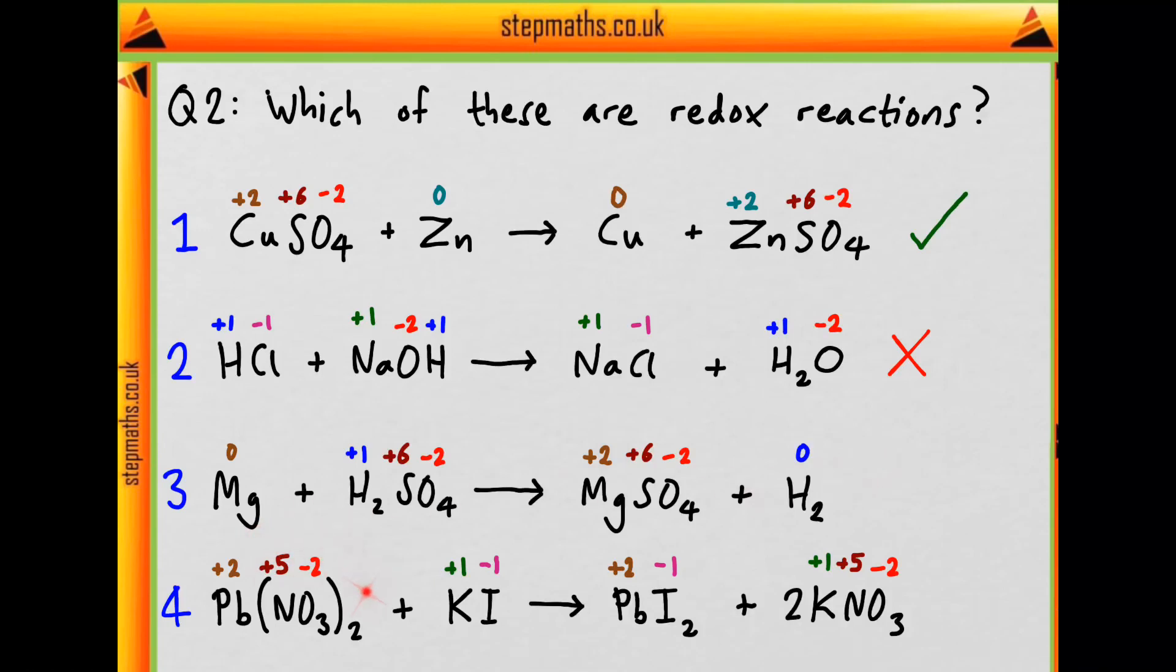Reaction three, we can see we've got magnesium zero going to magnesium two and we've got hydrogen one going to hydrogen zero. So similarly to reaction one, this is redox.